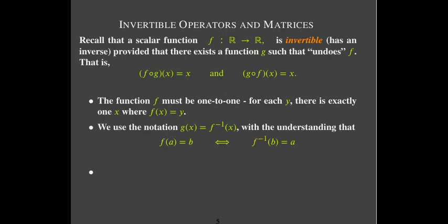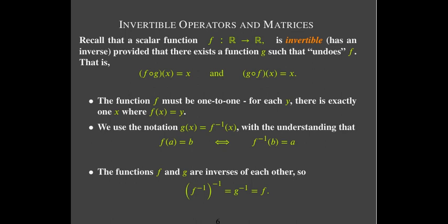We call the function that undoes f the inverse of f, and we write it as f with a superscript negative one — f-inverse. If a is the input to f and the output is b, then if you put b as the input to f-inverse, the output must be a. These functions are inverses of each other: f-inverse undoes f, and f undoes f-inverse. The inverse of f-inverse is f itself.